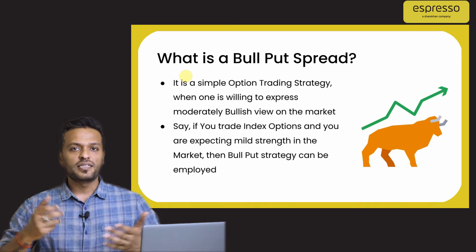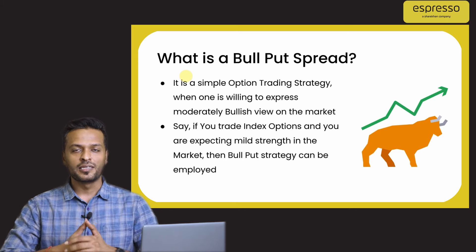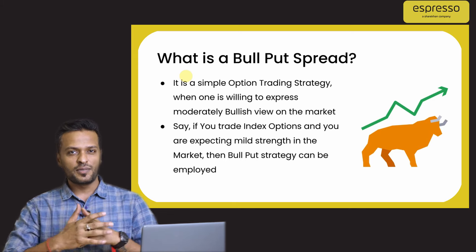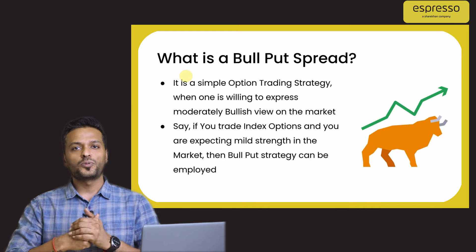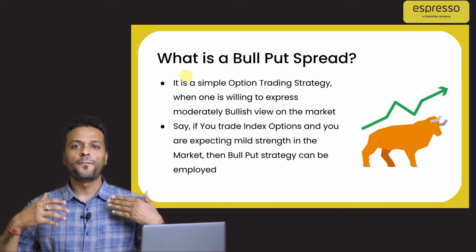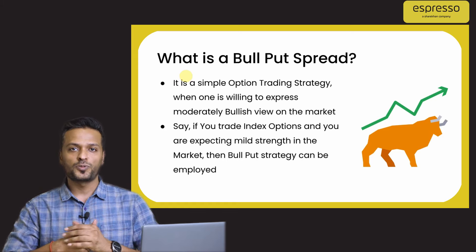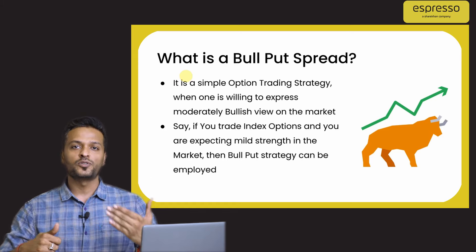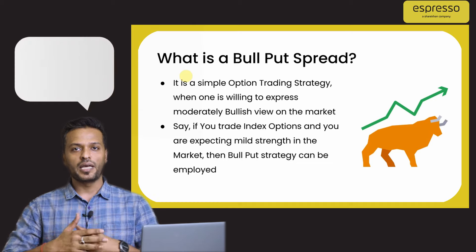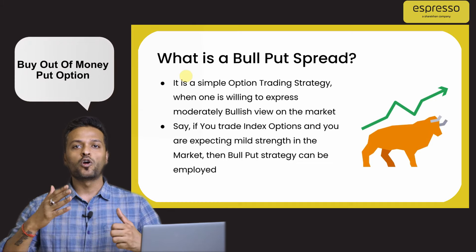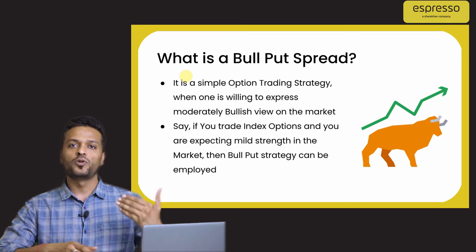Under this strategy, as the name suggests, you have put options positions running. Don't get confused when I say put option, because normally it is assumed that you trade put options only when you have a bearish view on the market. But under this strategy, you buy one put option position and you sell one put option position — selling an at-the-money put option and buying an out-of-the-money put option while implementing the strategy of bull put spread.